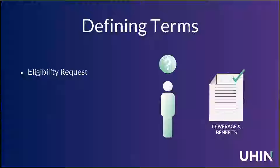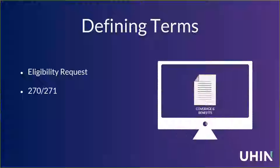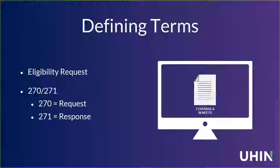With electronic eligibility, you enter some basic patient information into a software program on a computer, it gets sent out electronically, and a response comes back electronically. The code for this is the 270-271. You'll see this code on payer websites, clearinghouse enrollment forms, and many other places. The 270 portion is the request — anyone sending out electronic information asking for coverage and benefits. The 271 is the response — when whoever holds that insurance information sends it back electronically.